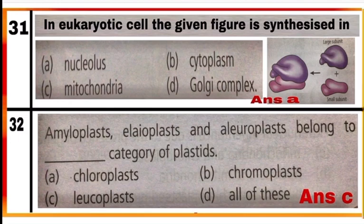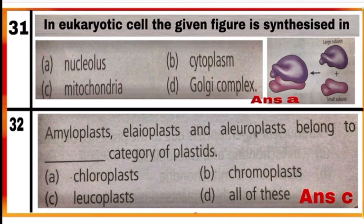Question 31: In a eukaryotic cell, the given figure is synthesized in option A — the nucleolus. In the nucleolus, the two subunits of ribosomes (one small and one large) join to form a single unit. This formation is required for protein synthesis and happens in the nucleolus, which is the chief site for ribosomal RNA synthesis and the center for formation of ribosome components.